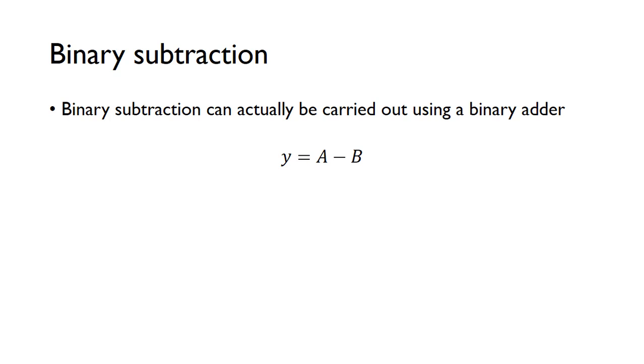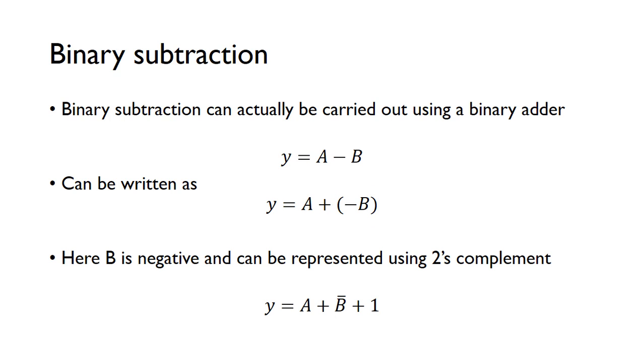But to do binary subtraction, we can actually use a binary adder. So we consider this: if we want to do a subtraction A minus B, we know we can rewrite that as A plus minus B because that's exactly the same. But now we've swapped this subtraction operator for an addition operator, but here we can see that B is now negative. And we know we're using binary numbers, signed binary numbers, we can use 2's complement to represent negative numbers. So we know minus B is the same in 2's complement as the 1's complement, which is just not B, and then the addition of 1. So we can represent this minus B using not B plus 1.